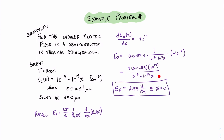One important thing to note about this particular equation is that the electric field varies over the distance of the device. This is in contrast to what we're going to find when we have an exponential equation for the carrier concentration across the length of the device. In that case, we're going to find that the electric field is constant.